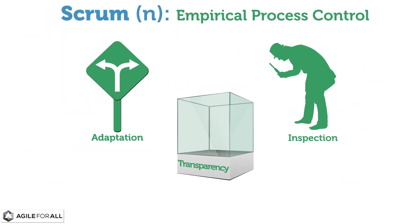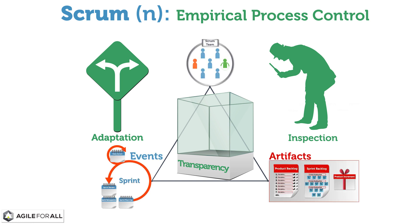Scrum is based on empirical process control, and so significant aspects of Scrum are designed to provide transparency, inspection, and adaptation. To create transparency, Scrum's events and artifacts are visible to all of those responsible for their outcomes. Organizations using Scrum frequently inspect Scrum artifacts and progress towards a sprint goal to detect undesirable variances. They balance the frequency of inspection so it doesn't get in the way of the work, but still provides sufficient opportunities to course correct.